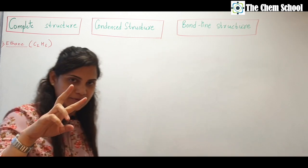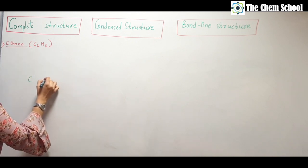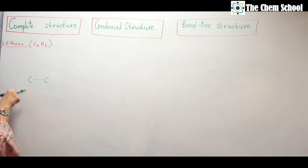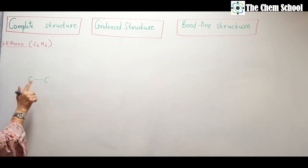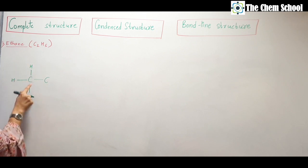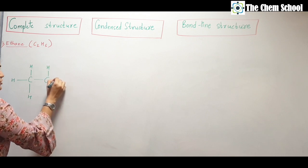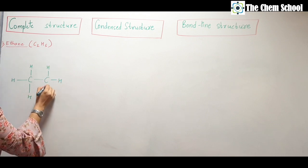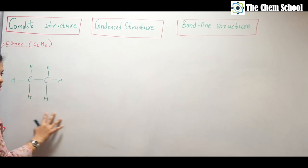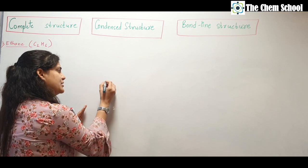In ethane we have two carbons. For the complete structure, first write down the carbon. We know that carbon shows tetravalency, so connect the two carbons. The rest of the bonds will be completed by hydrogen, so each carbon should have four bonds. Once both carbons each have four bonds, this structure is completed.